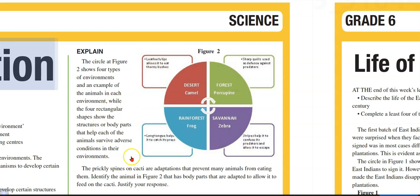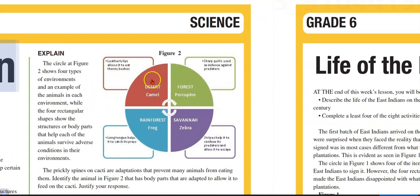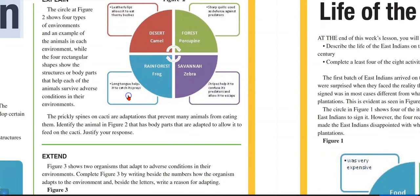So there are four rectangular shapes. In the desert, we have a camel, and it has leathery lips that allow it to eat thorny bushes. In the forest, a porcupine has sharp quills used to defend itself against predators. In the savannah, a zebra's stripes help to confuse its predators and allow it to escape. And in the rainforest, a frog has a long tongue that helps it to catch its prey.